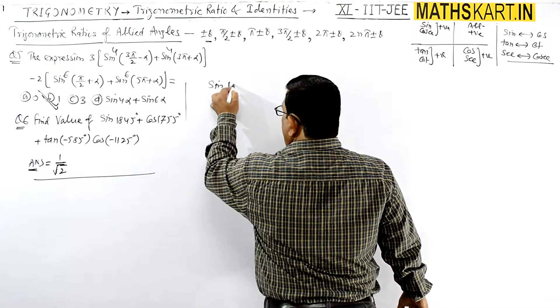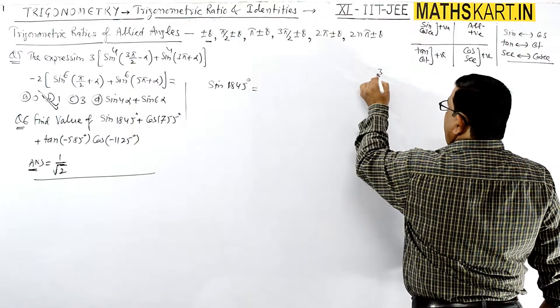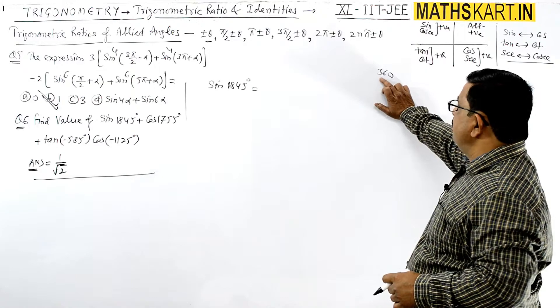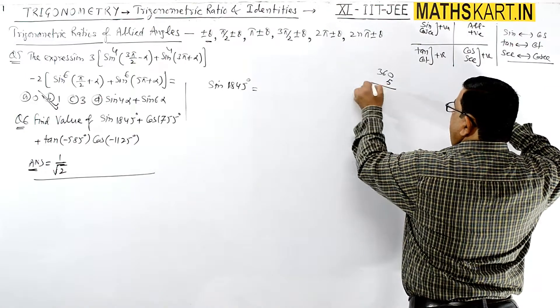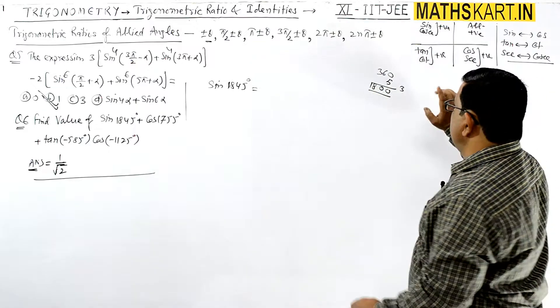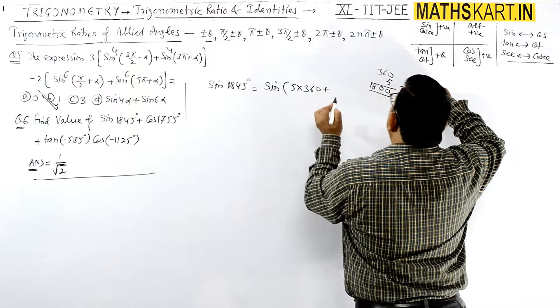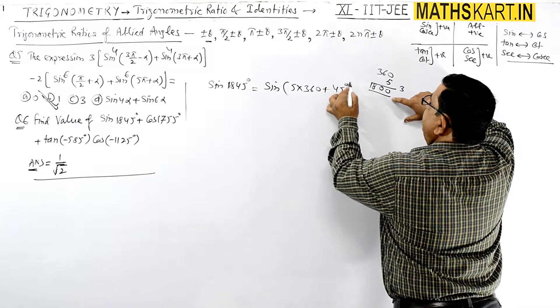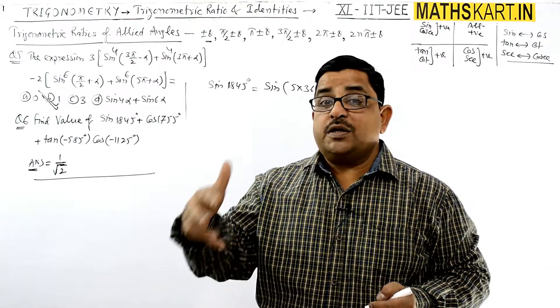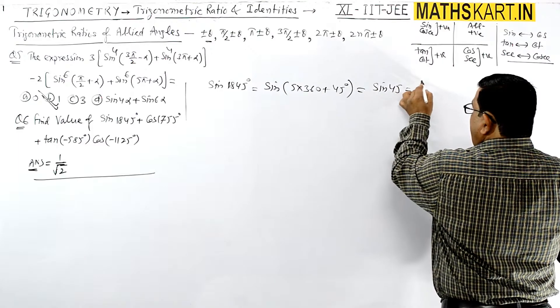First we take value sin 1845 degrees. So 1845, suppose we multiply 360, 5 times is 1800 degrees. So this is 5 times, this becomes 5 times 360 plus the remaining angle 45 degrees. So it takes 5 rounds, 5 times 360 plus θ. So the value equals sin 45, sin 45 equals 1/√2. This is clear.